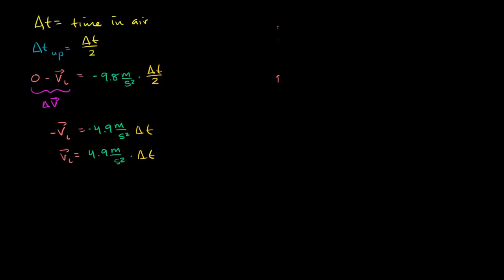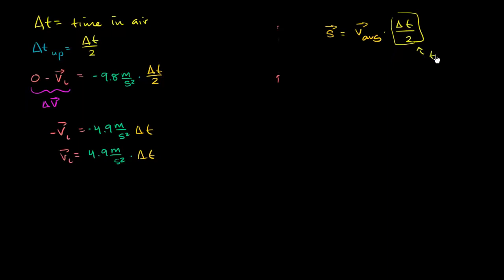Now let's figure out the total distance — the displacement — we travel during the time up, which gives us our peak displacement. Displacement is equal to average velocity times change in time. The change in time we care about is the time up, which is delta t over 2. For the average velocity, assuming constant acceleration, it's the initial velocity plus the final velocity, divided by 2.